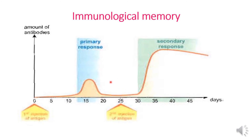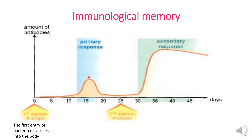Immunological memory: Let's discuss this line graph. The title is the variation of the amount of antibody secreted as a function of days, upon first and second infection. Upon the first infection — the first entry of bacteria or viruses into the body — the B lymphocytes take approximately 13 days to start secreting a moderate amount of antibodies, as a primary response.